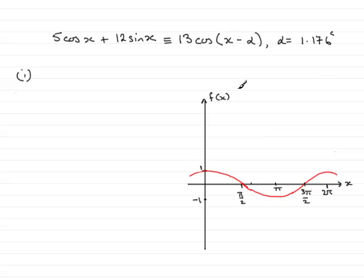Now when you have a function like this and you replace the x with x minus alpha, the effect it has is to translate this graph alpha units to the right. So in other words, what you would have is the cosine graph would have been moved to this dotted graph here. It would have been moved 1.176 radians to the right.